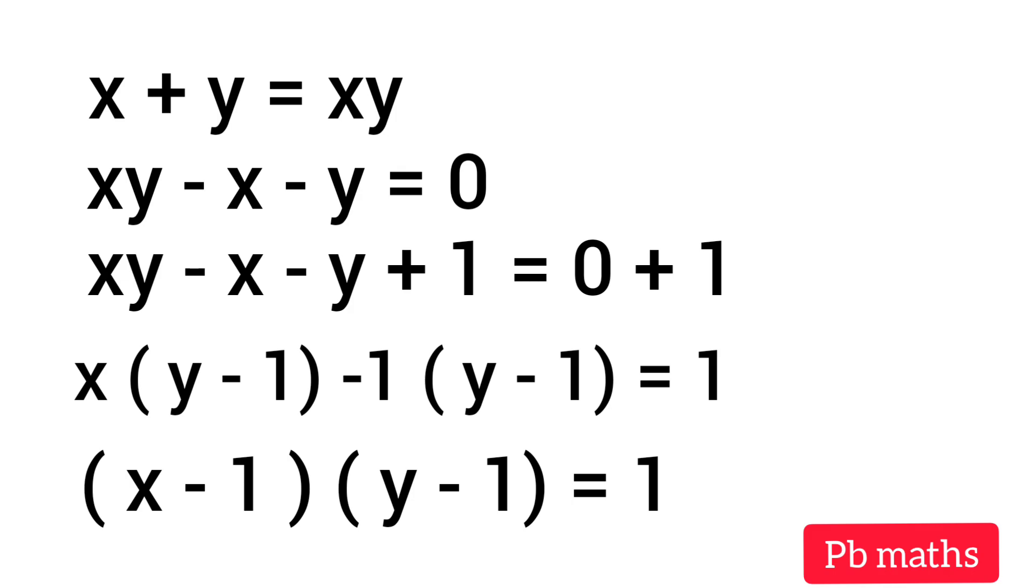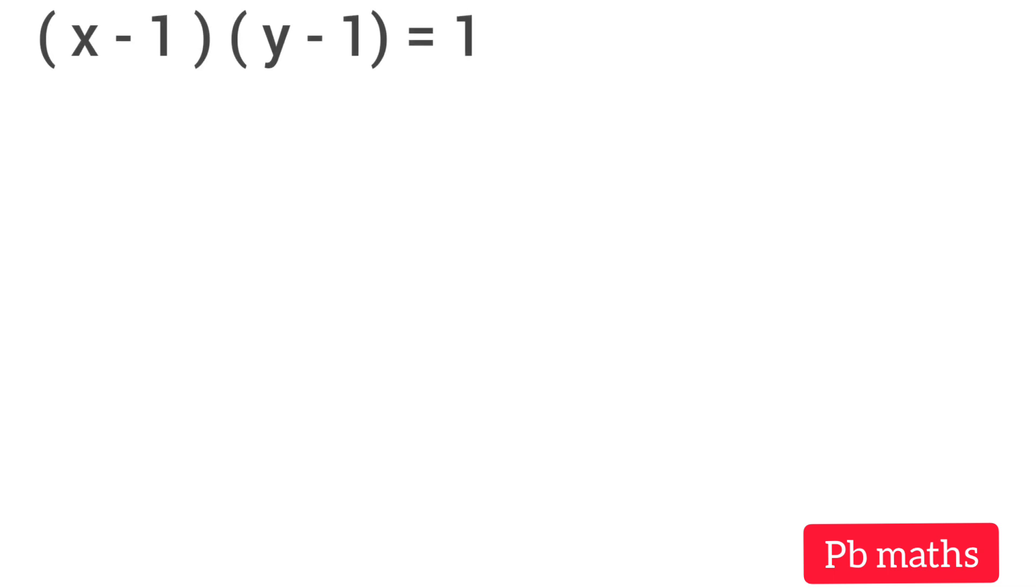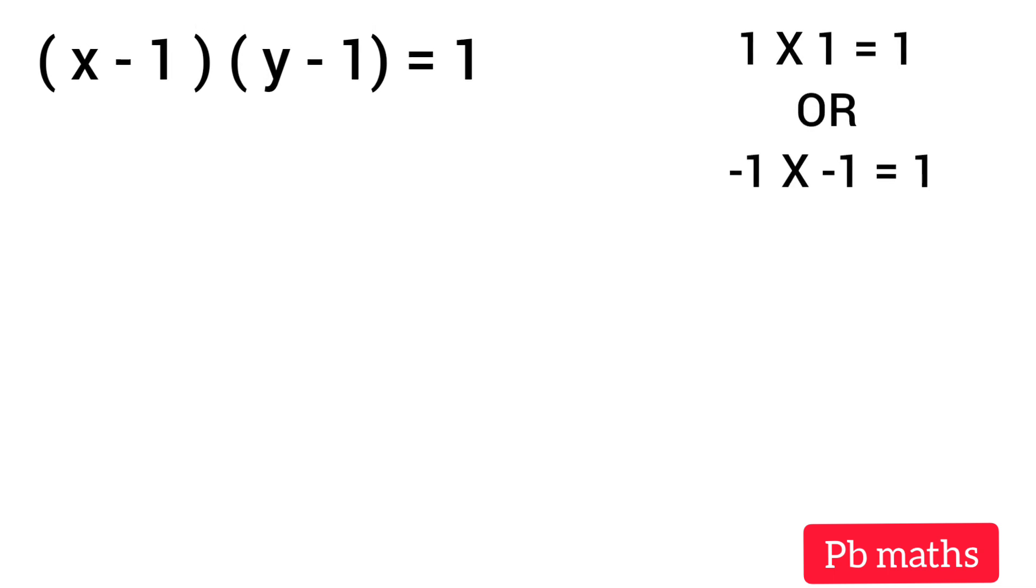We know that the product of any two terms equals 1 is possible only in two cases: 1 times 1 equals 1, or minus 1 times minus 1 equals 1.